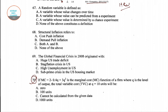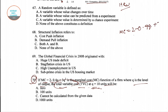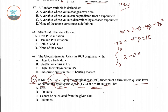In question number 70, the marginal cost function of a firm is given, where Q is the level of output and total variable cost is to be found. We have to find the total variable cost where Q equals 10. The marginal cost is given by 2 minus 0.4Q plus 3Q squared. Total variable cost at Q equals 10 would be the integration from limit 0 to 10 of (2 minus 0.4Q plus 3Q squared) dQ.